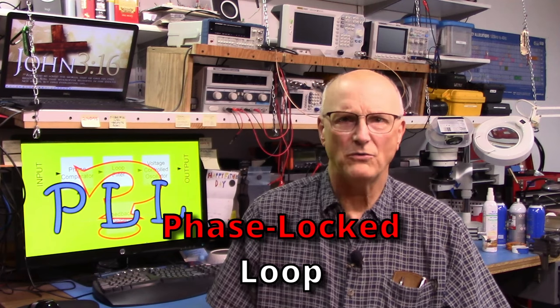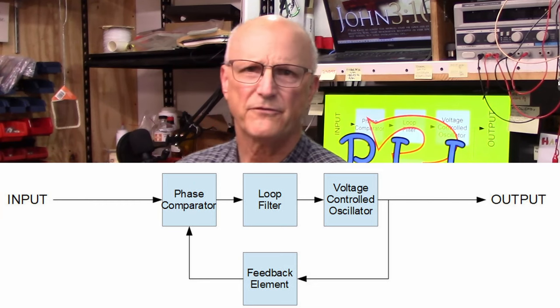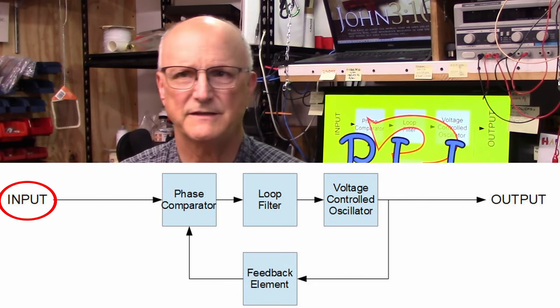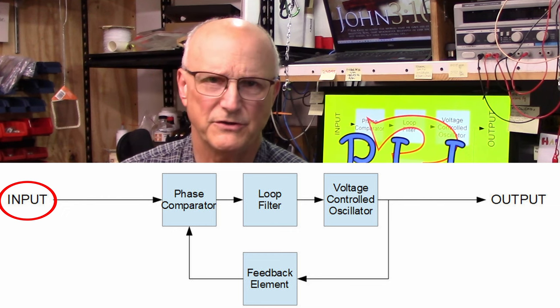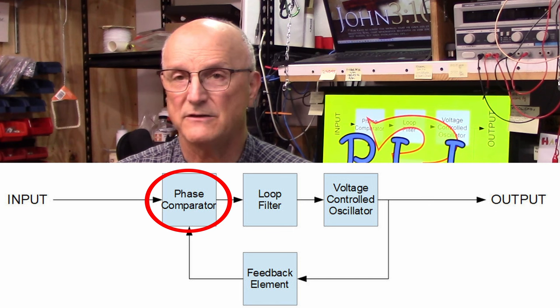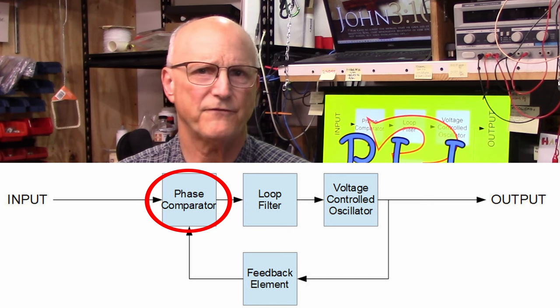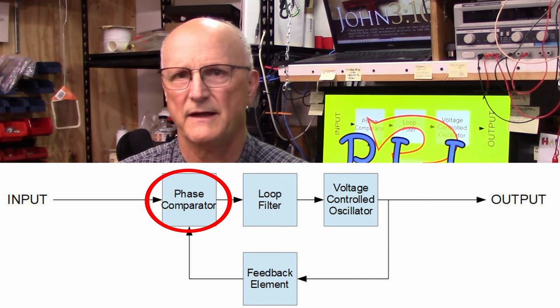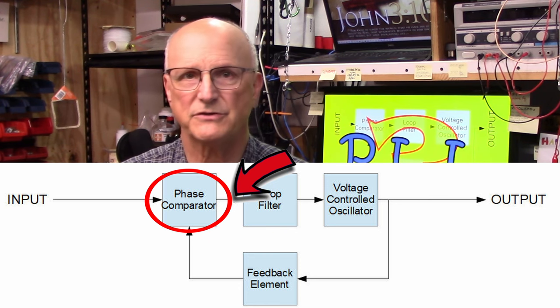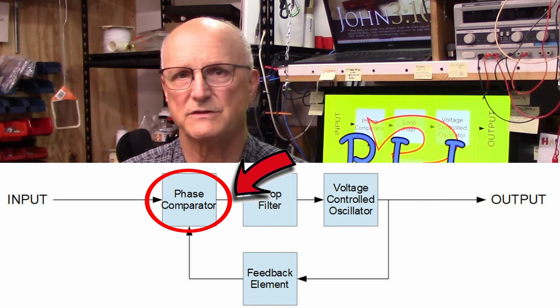This whole discussion leads us to this block diagram. Starting from the left, we see the input. This is what the phase of the output is going to be locked to. This next block is where the phase of the feedback signal is being compared to the phase of the input signal. The output of this circuit is a voltage which is proportional to the phase difference between the two signals.